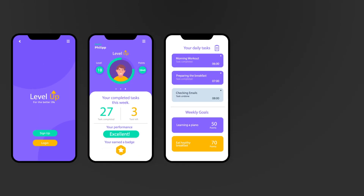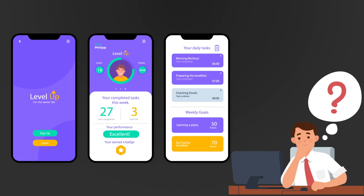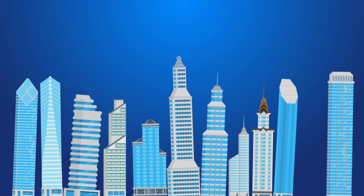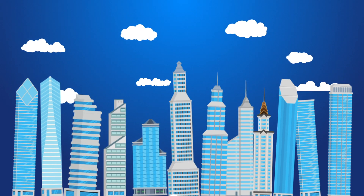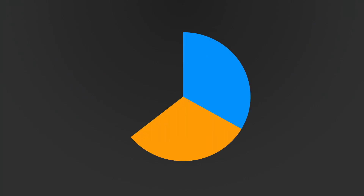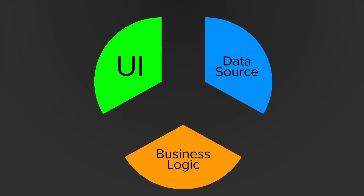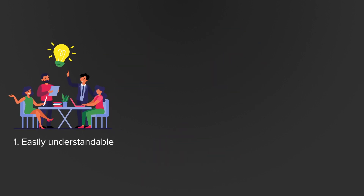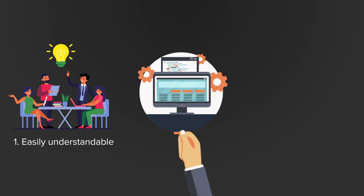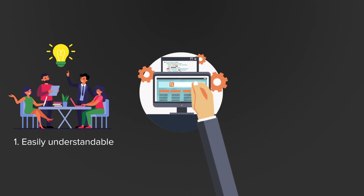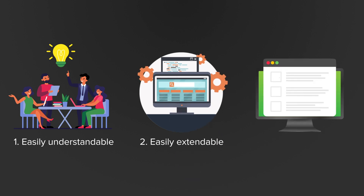The bigger our software gets, the harder it is to keep the overview, and therefore it is crucial that we give our projects a good structure, which usually means a separation of concerns. We want to separate the UI, the business logic, and the data source so that we and our colleagues can easily and quickly understand the software, easily extend it with more features, and easily test it.